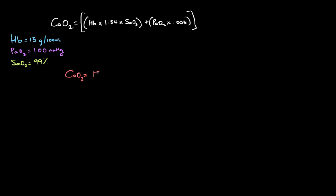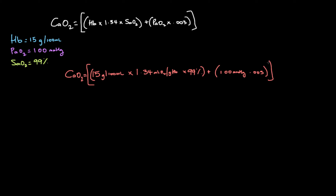We're going to plug in 15 grams per 100 ml for hemoglobin, multiply that by 1.34 — that's mls of O2 per gram of hemoglobin — and then multiply by our oxygen saturation of 99 percent. That gives us the first part. Then we add our PaO2 of 100 millimeters of mercury multiplied by the conversion factor 0.003. That should give us our answer.